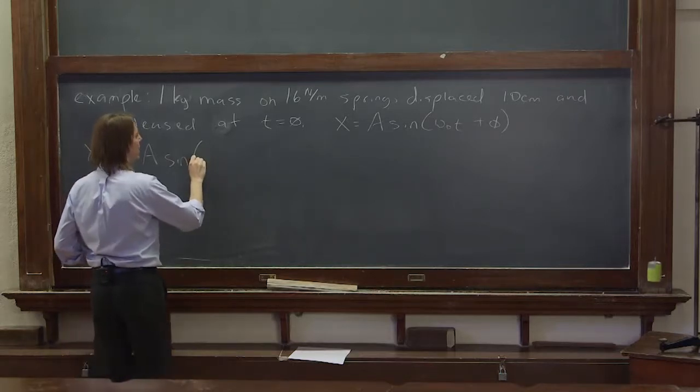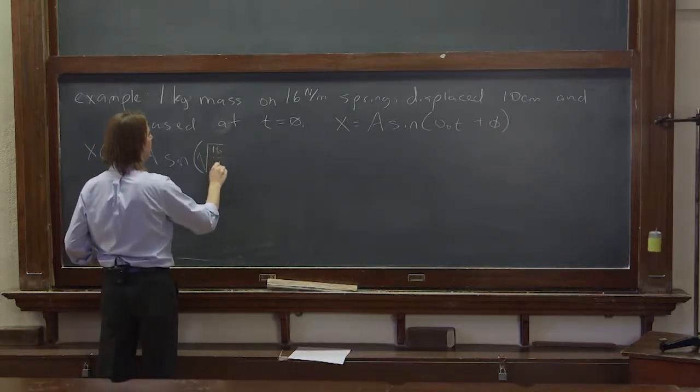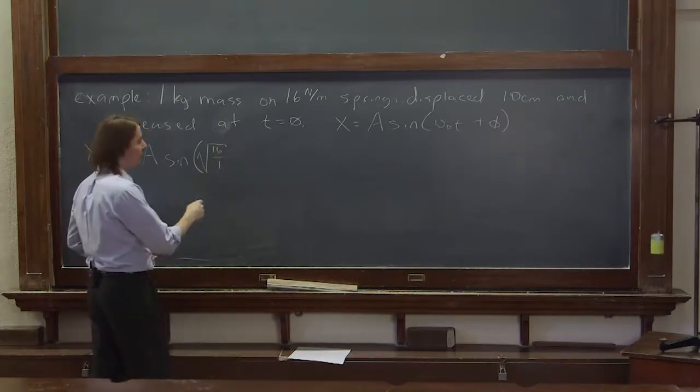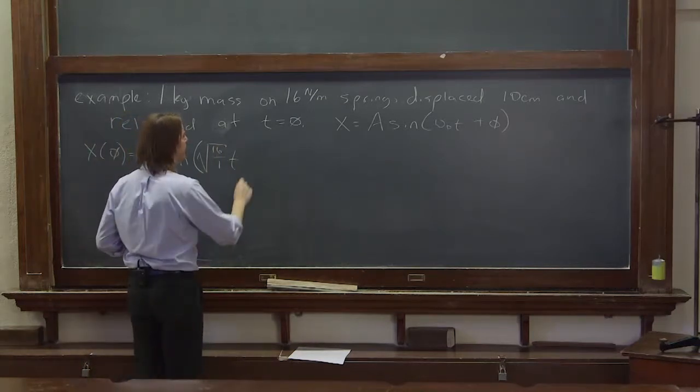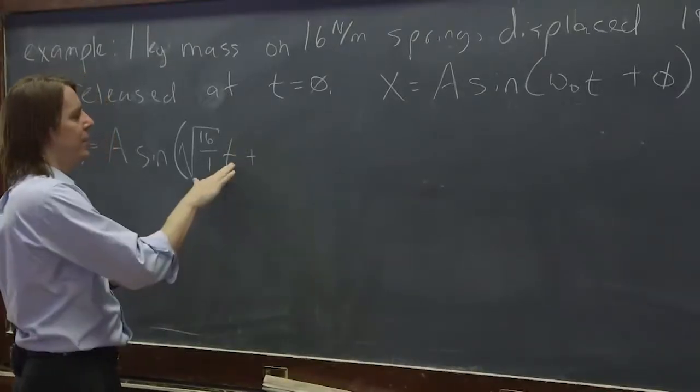Sine omega naught. Omega naught is the square root of k over m, that's 16 over 1. So that's going to turn out to be 4, t, but time is zero.